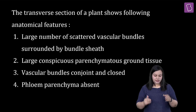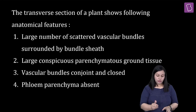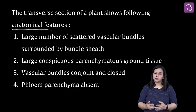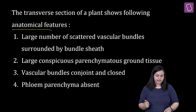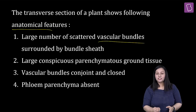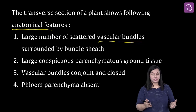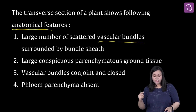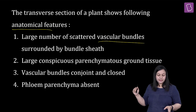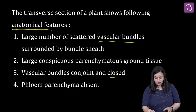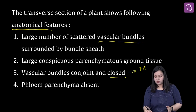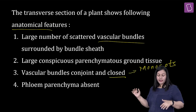Chaliye dekhte hain is question ko. The transverse section of a plant shows following anatomical features. Yeh question humara 11th ke chapter anatomy of flowering plant se hai. Yahan kya kya listed hai — large number of scattered vascular bundles surrounded by bundle sheaths is ek key feature hai. Aapne yeh padha hua hai — scattered vascular bundle kahan hote hain? Doosra point hai — large conspicuous parenchymatous ground tissue.